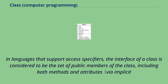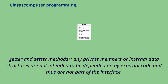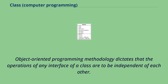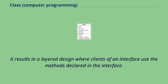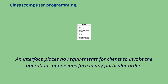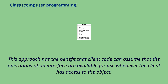In languages that support access specifiers, the interface of a class is considered to be the set of public members of the class, including both methods and attributes via implicit getter and setter methods. Any private members or internal data structures are not intended to be depended on by external code and thus are not part of the interface. Object-oriented programming methodology dictates that the operations of any interface of a class are to be independent of each other, resulting in a layered design where clients of an interface use the methods declared in the interface. An interface places no requirements for clients to invoke the operations in any particular order.